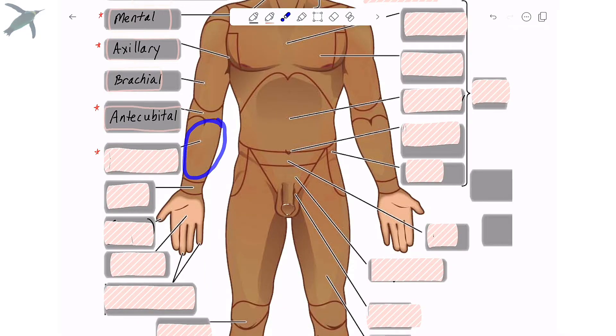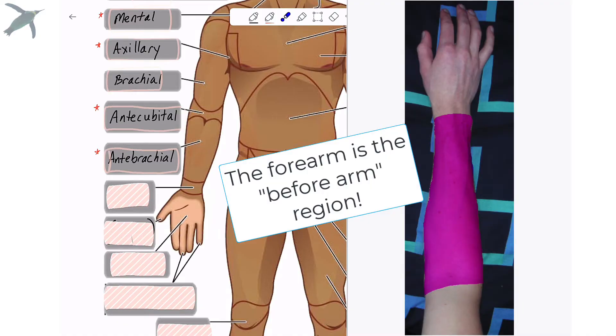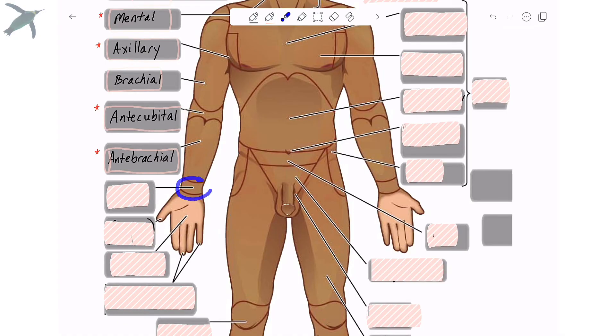Now this region on both the anterior and posterior side has the same name. That is antebrachial. So literally before the arm. The wrist, we refer to as the carpal region.